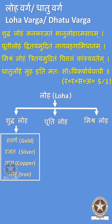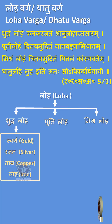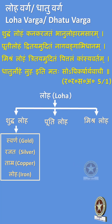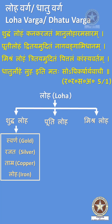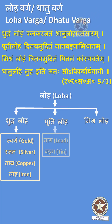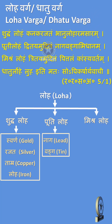Shuddha Loha includes four Rasadravyas: Kanaka (Gold), Rajata (Silver), Tamra (Copper), and Lohashmasara (Loha, that is Iron). Puthi Loha includes two drugs: Naga (Lead) and Vanga (Tin).